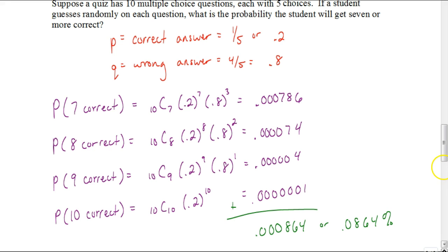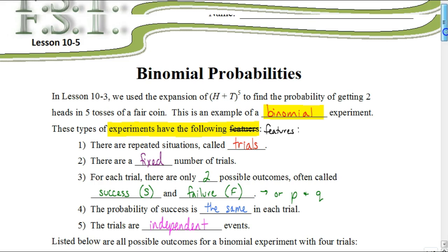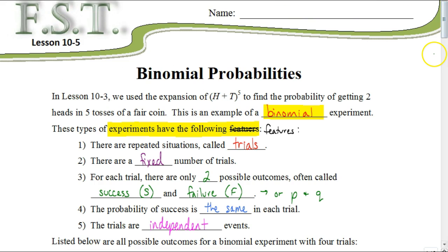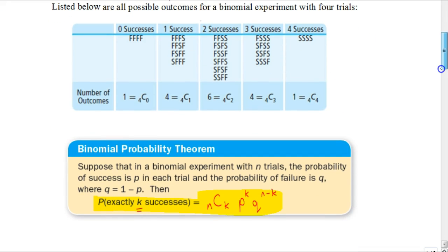So there you have it — that is how we use binomial probabilities. The key is to make sure you know this theorem. That's a few different ways we can apply it, so hopefully that made sense. Good luck as you work on your assignment. Thank you.